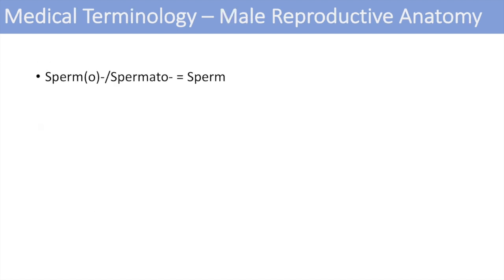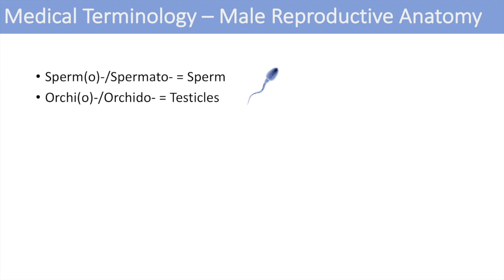Now moving on to male reproductive anatomy. The first one is spermo or spermato, which denotes the sperm. The next one is orchio or orchido, which denotes the testicles — you can think of orchitis, an inflammation of the testicles, or cryptorchidism, the medical condition where the testes are located in the abdomen. The next one is osceo, which denotes the scrotum.